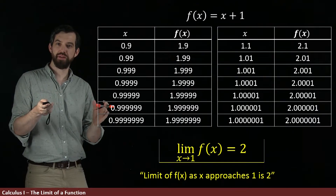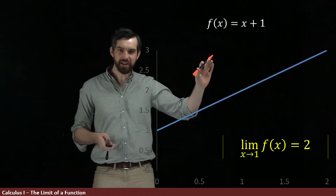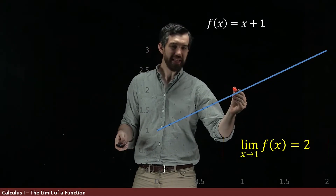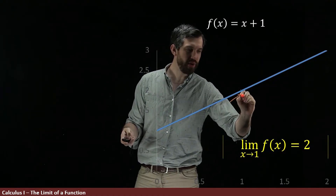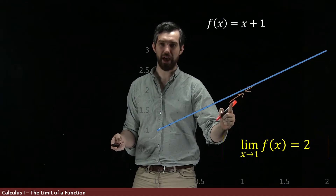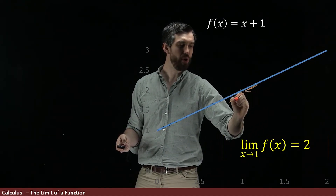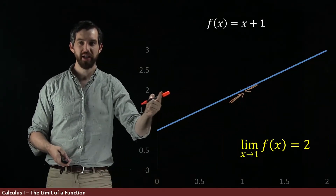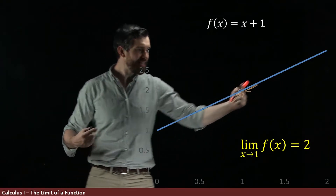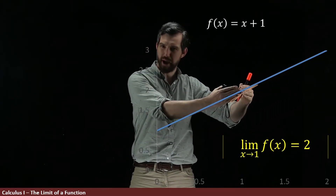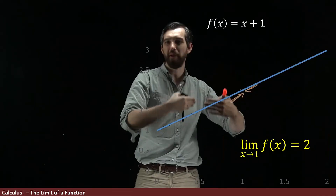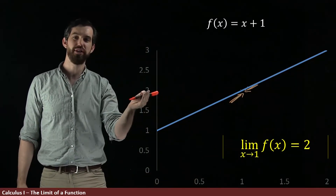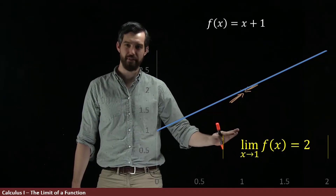Now let's investigate the same thing graphically. Here's our f of x, and I want to look at what happens as we get close to 1. The idea is: if I get really, really close to 1 from either side — either from the left or from the right — my function values all get close to what's the height here, which is the value of 2. As I get closer and closer — 0.01, 0.001 — the height of the function is getting closer to 2. So we say that the limit as x goes to 1 of f of x is 2.